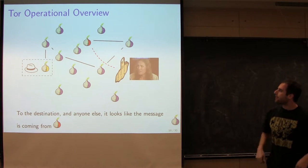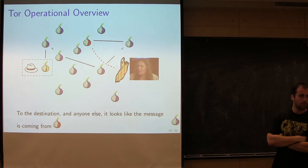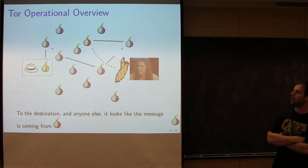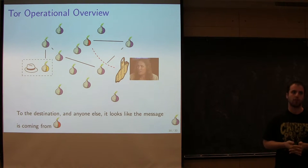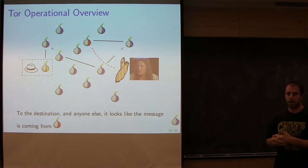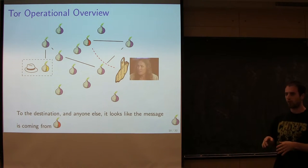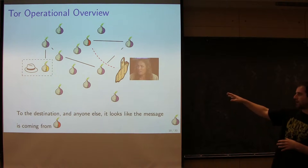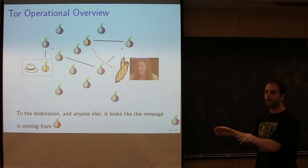The target thinks that somebody sent the message — specifically the exit node. The paper suggests giving a hostname to your onion routers like 'anonymous' or referencing the Tor network, so that people know the traffic is not coming from you specifically, it's just a service you're offering.